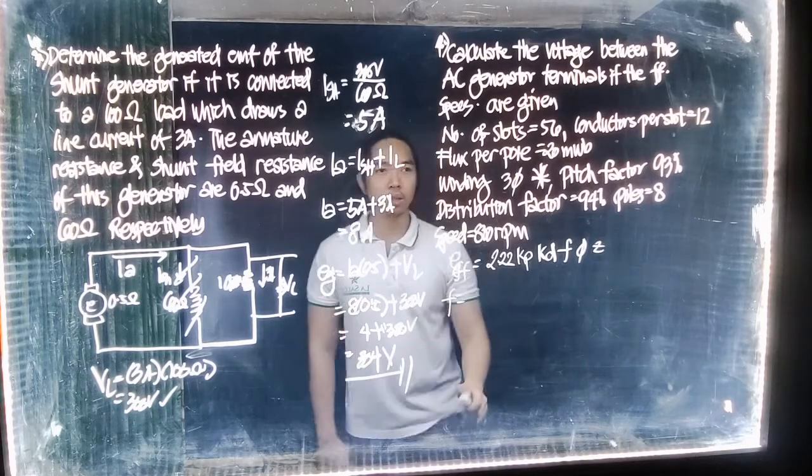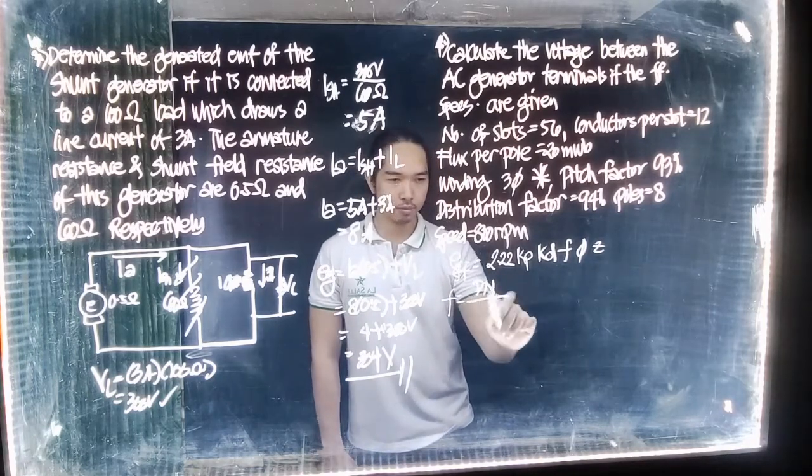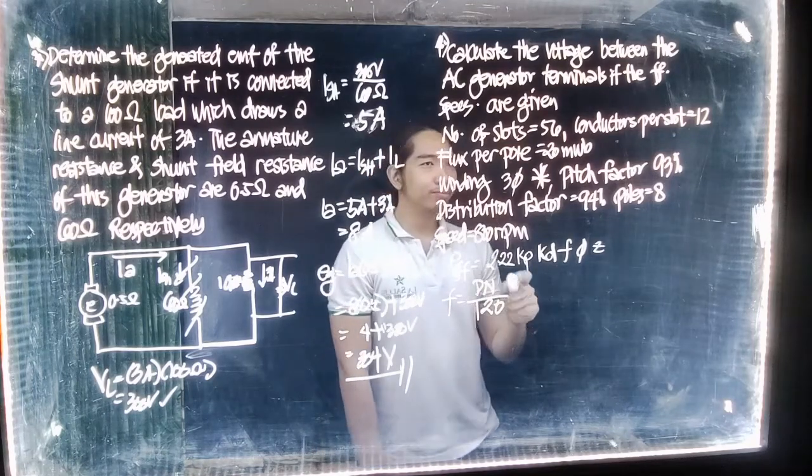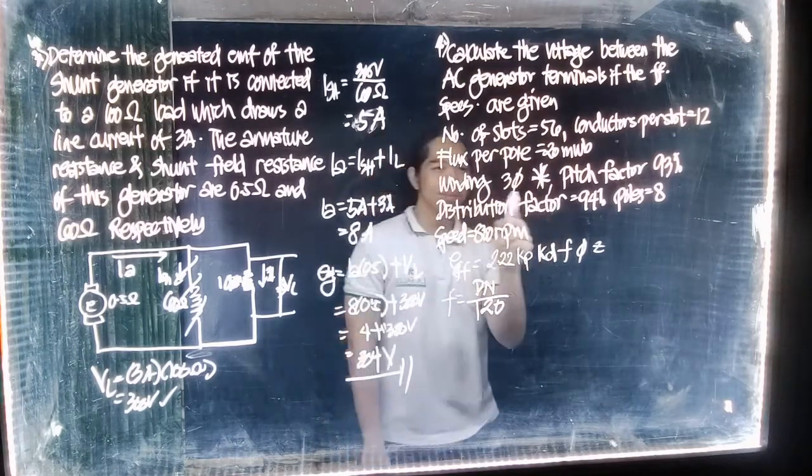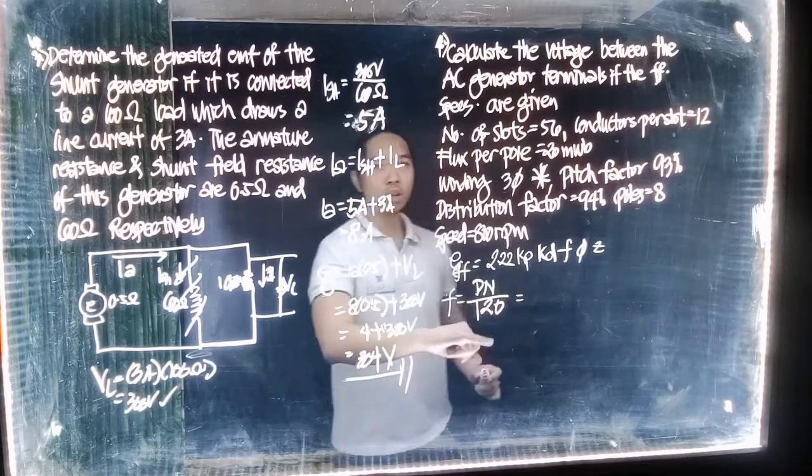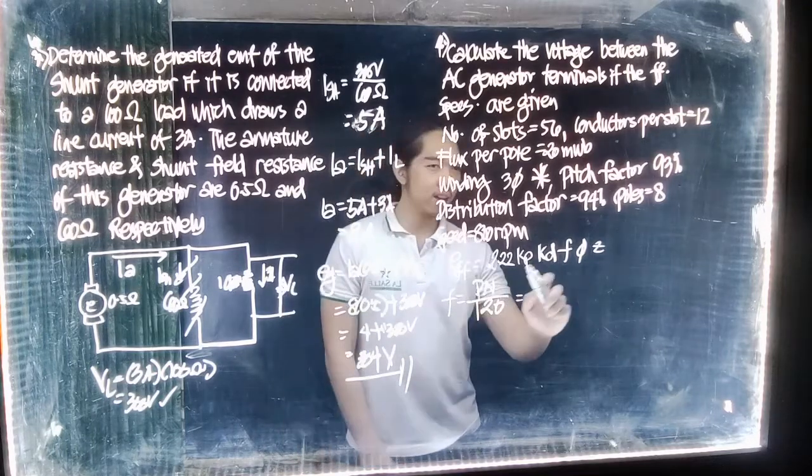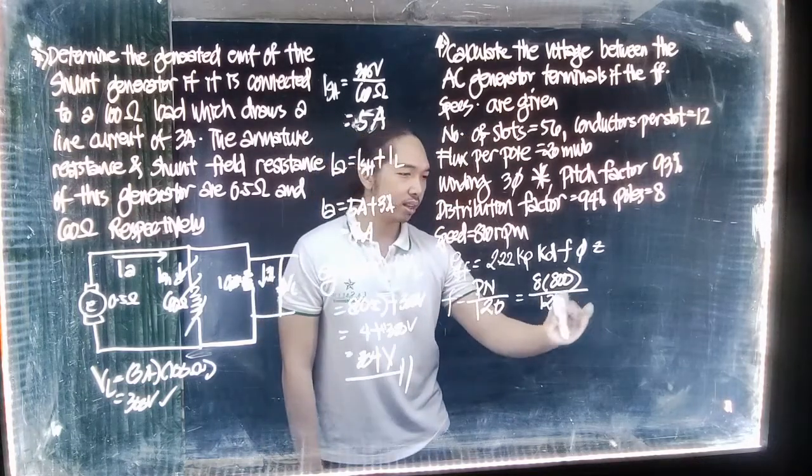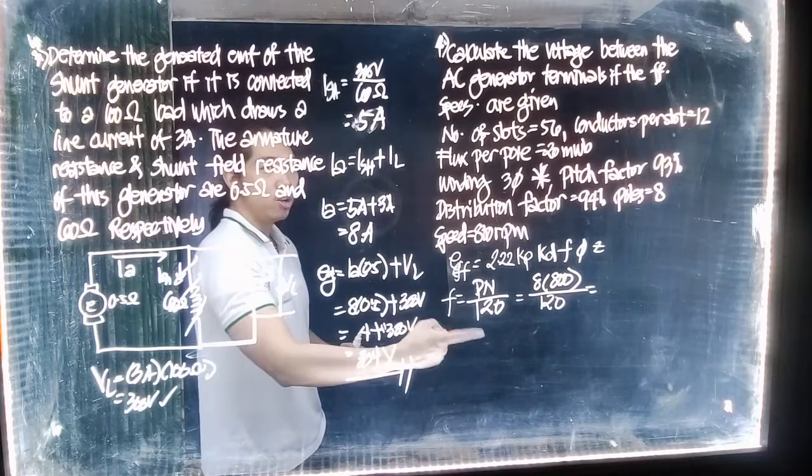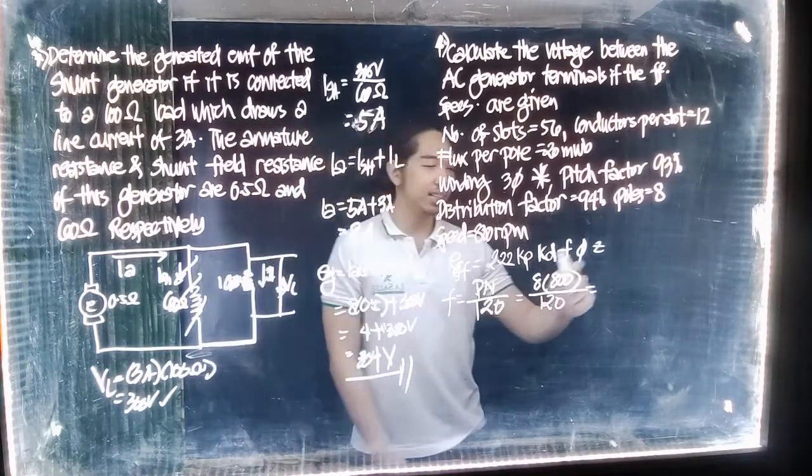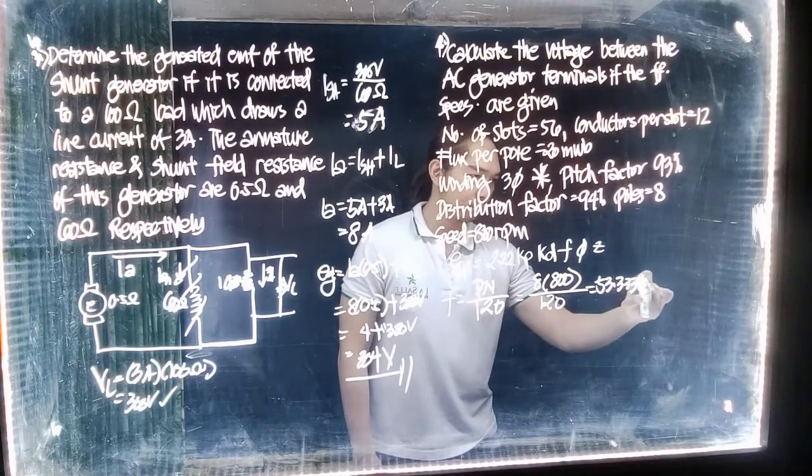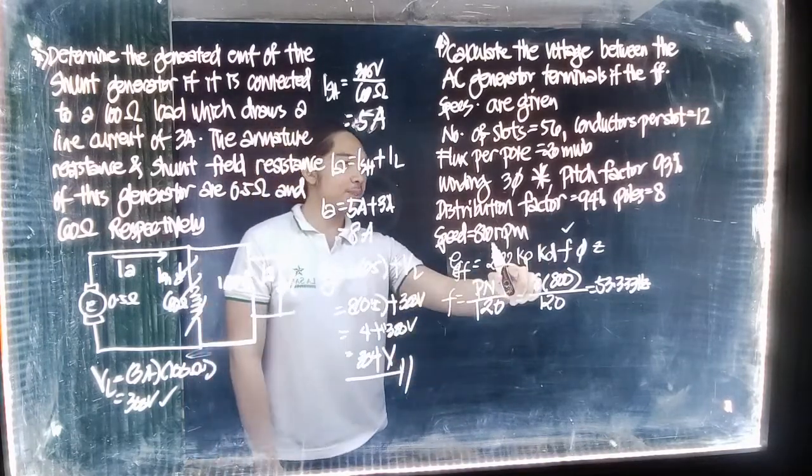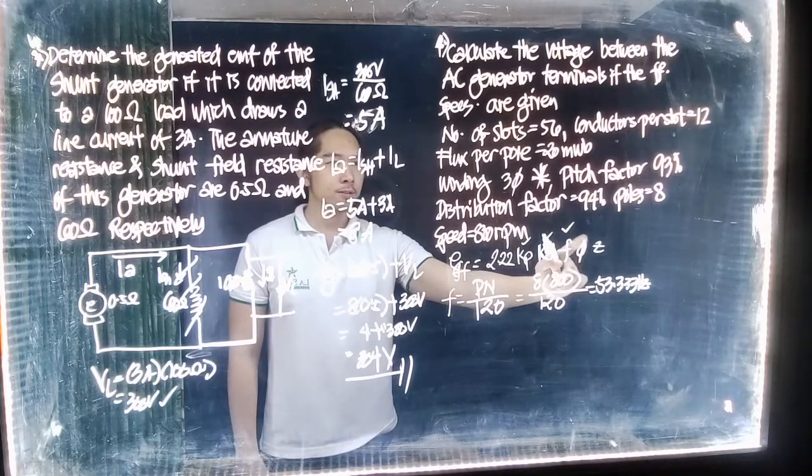To solve the frequency, we're going to use another formula. The frequency is equal to P times N divided by 120, where P is the poles and N is the armature speed. If we're going to plug in all of the values here, we have 8 poles times 800 divided by 120. If you input this in your calculator, you can calculate the frequency as 53.333 Hertz.